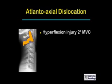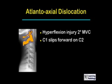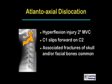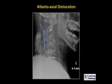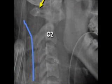Atlanto-axial dislocation: these are hyperflexion injuries usually secondary to motor vehicle accidents. C1 will slip forward on C2. There are frequently associated fractures of the skull and/or facial bones. Neurologic injury is common and these are unstable fractures. Here's an example of an atlanto-axial dislocation.